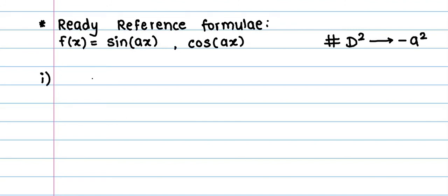The first formula that we are going to discuss is, our auxiliary equation is d square plus A square into sin A x or cos A x. Then by using the ready reference formula or the shortcut formula, we replace d square by minus A square and after replacing d square by minus A square, we get 0 in the denominator which is case of failure.